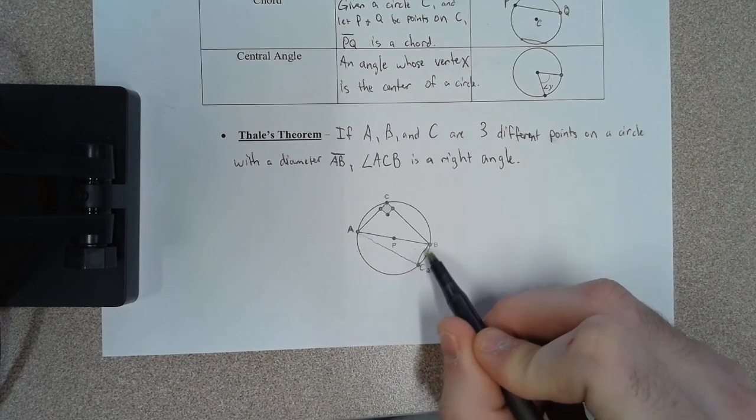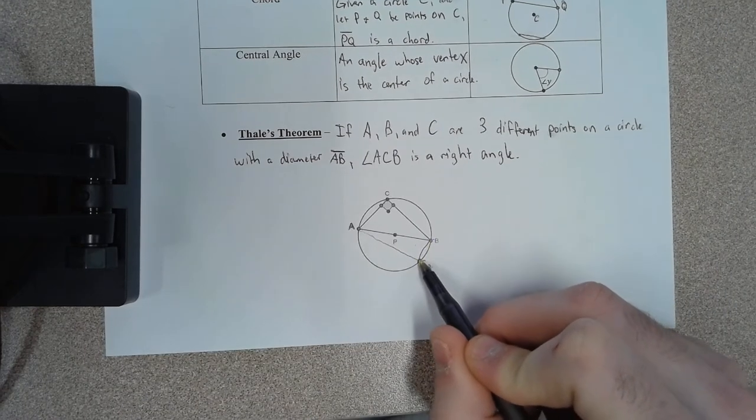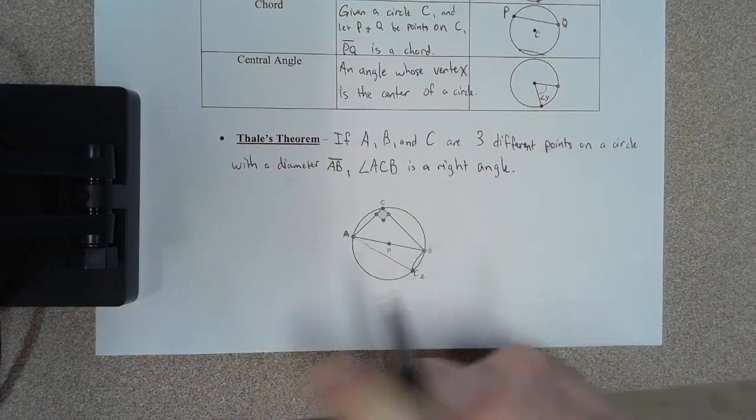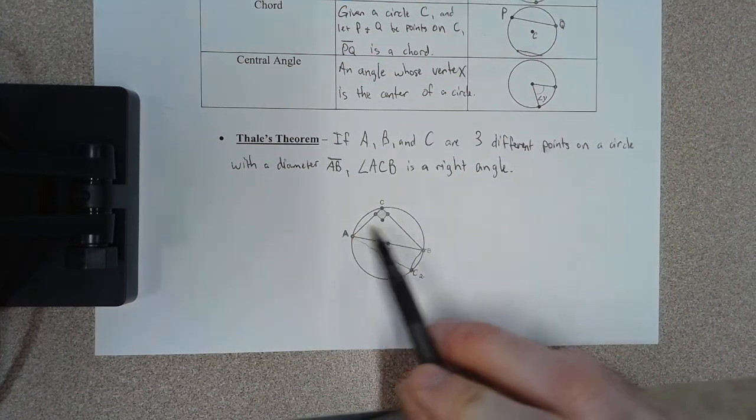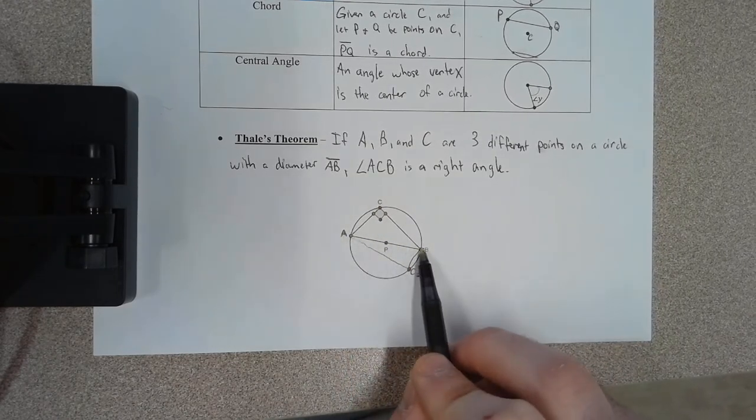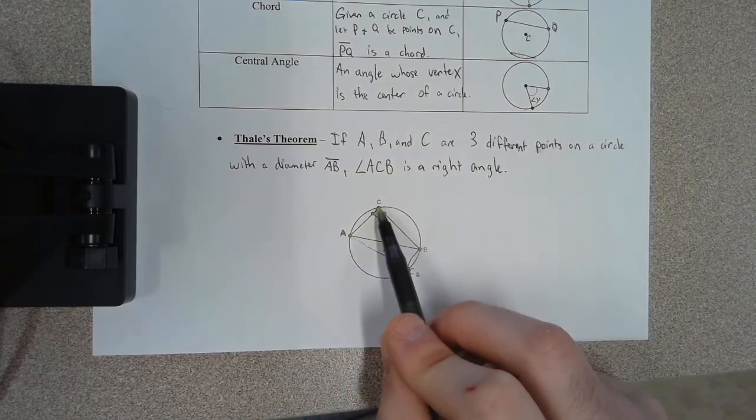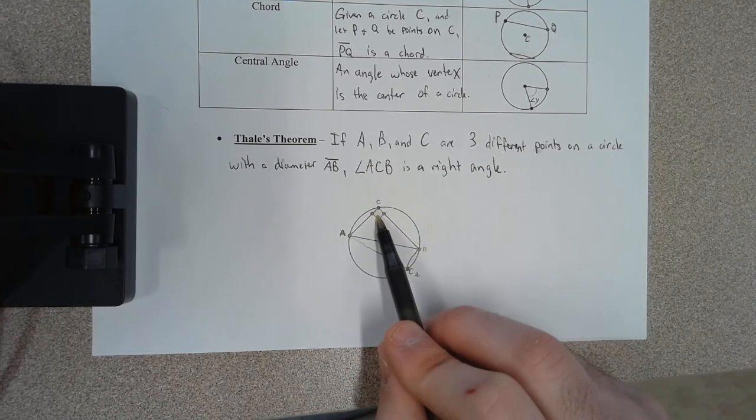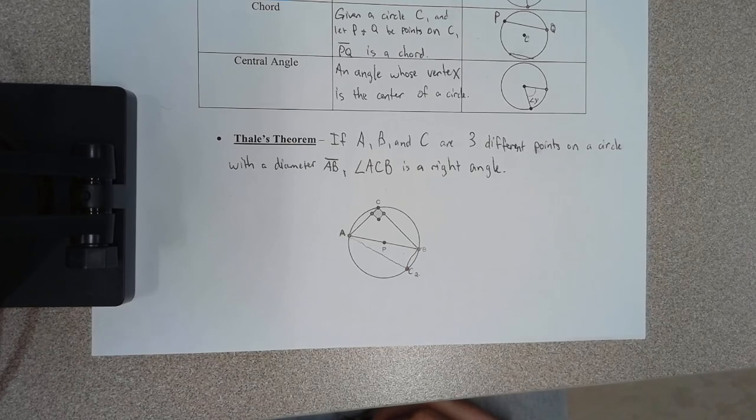that angle is going to be a right angle. So that's all Thales' theorem is saying: if you have three points on a circle, A, B, and C, where A and B are your diameter, then the third point, when you connect them to A and B, is going to form a right angle. That's what Thales' theorem says.